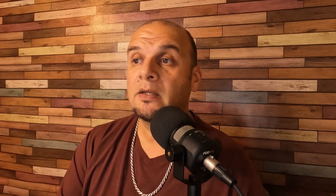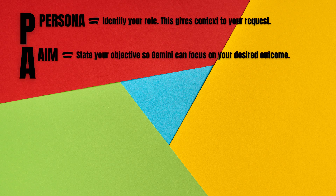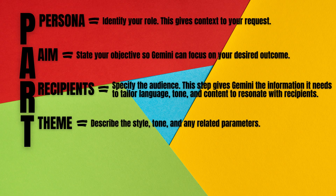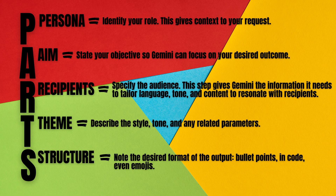For Persona, identify your role — this gives context to your request. For Aim, state your objectives so Gemini can focus on your desired outcome. R is for Recipients — specify your audience; this step gives Gemini the information it needs to tailor the language, tone, and content to resonate with recipients. Theme is where you describe the style, tone, and any related parameters. Structure is noting the desired format for the output — do you want it in bullet points, in code, or emojis? Make sure you are using the PARTS method when inputting into any AI tool, specifically with Gemini.